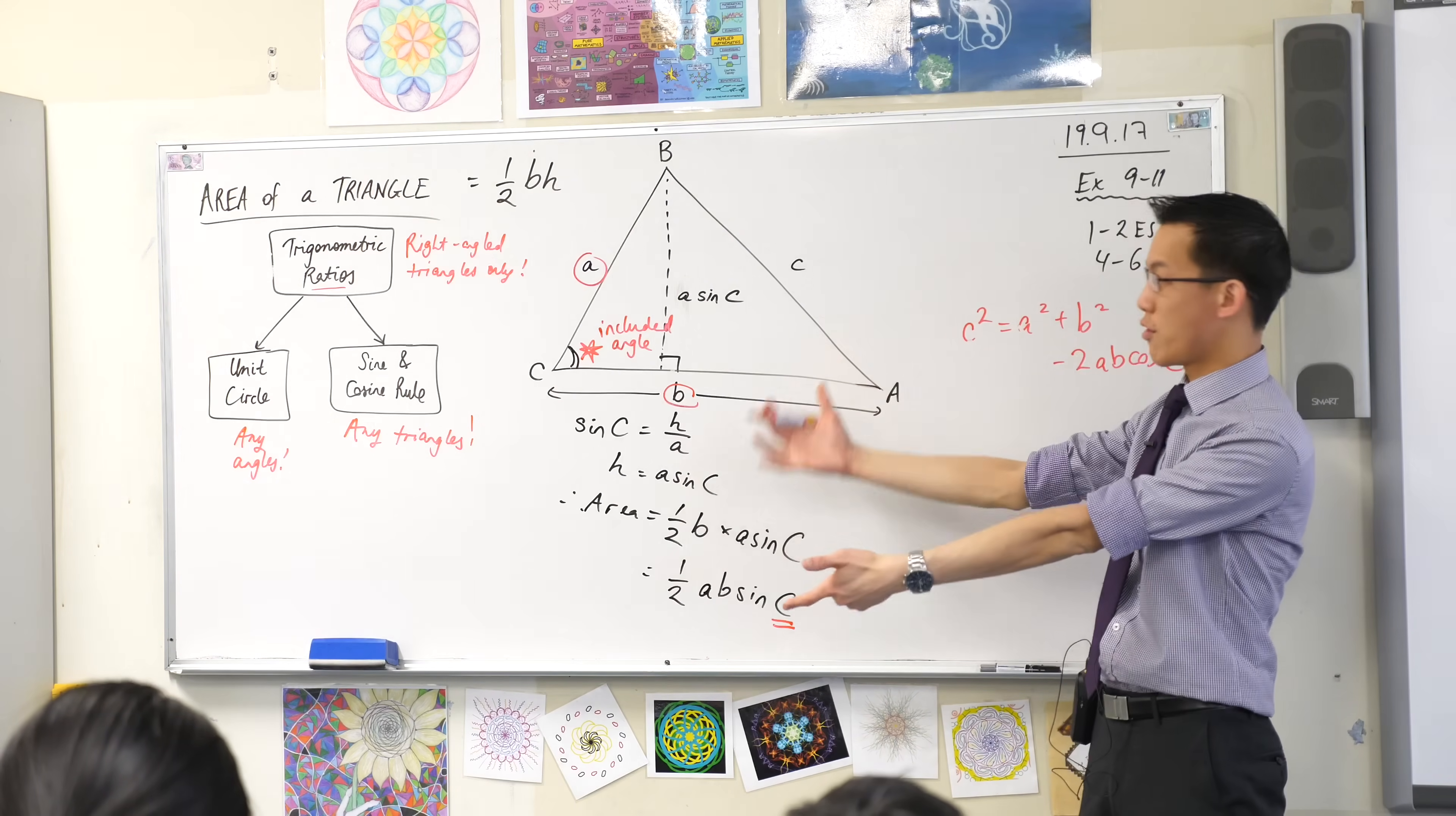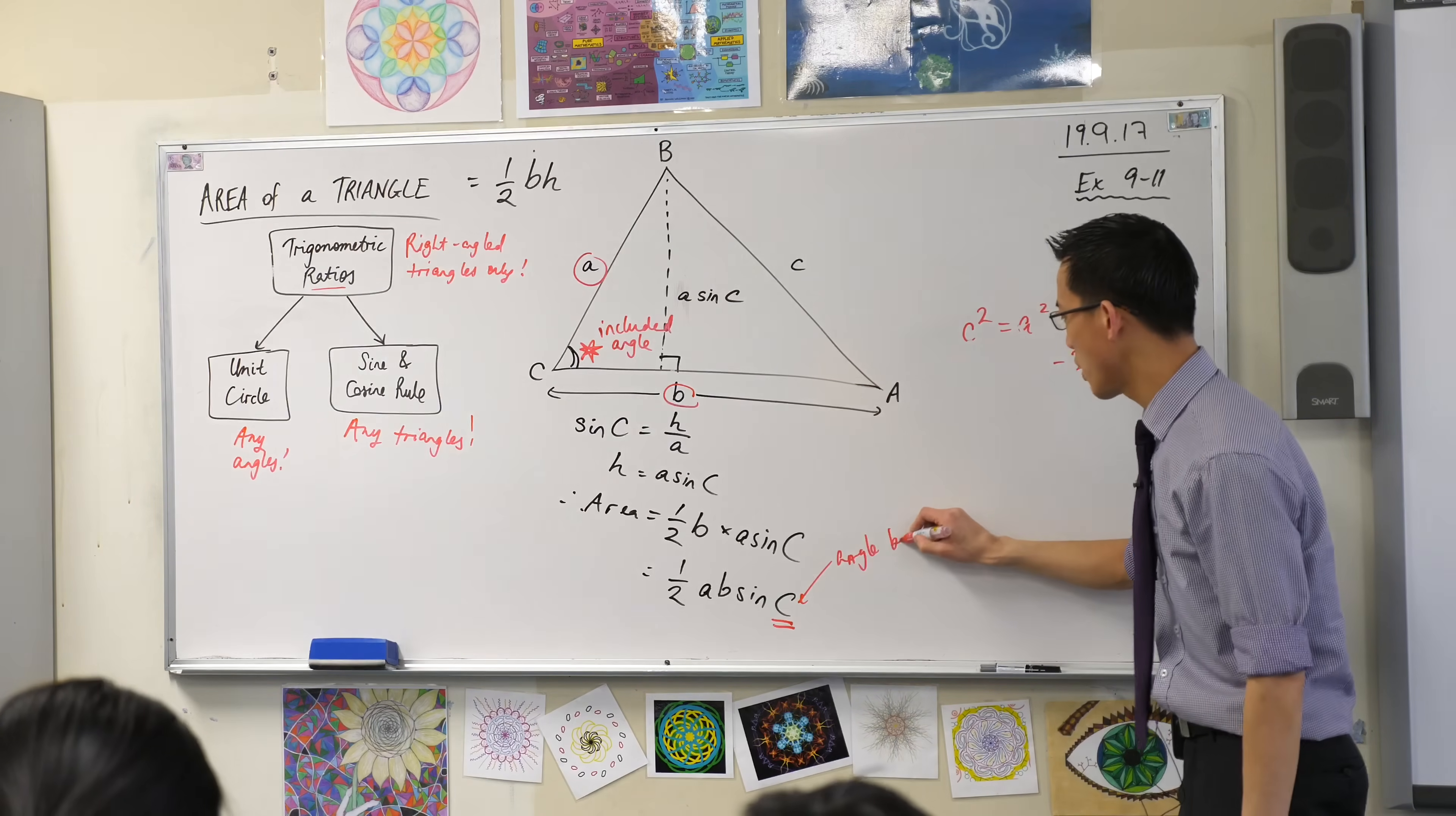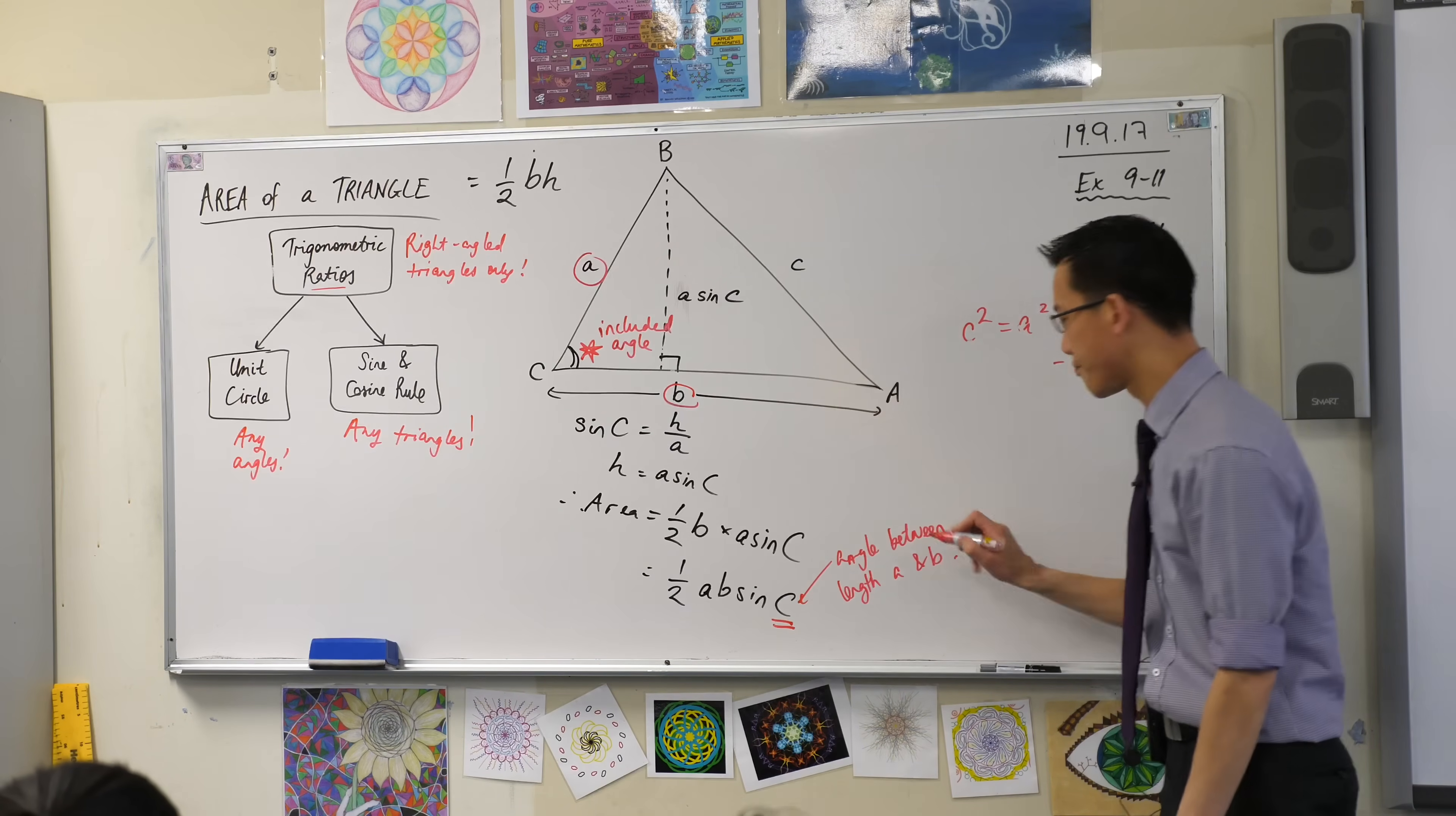Here, for the area of a triangle formula, the new one, you can't just pick any angle. This guy is the angle, that's a bad N, between or included by length A and B.